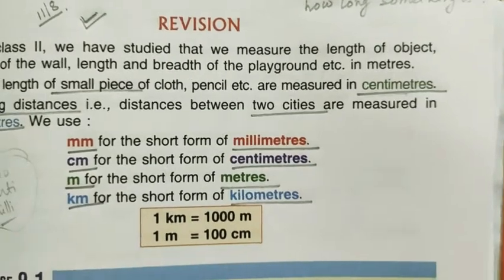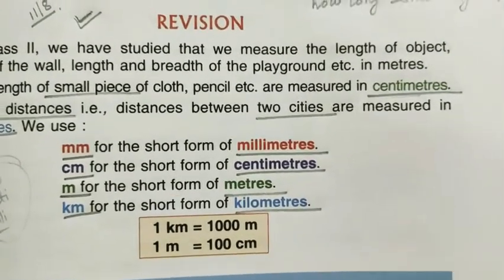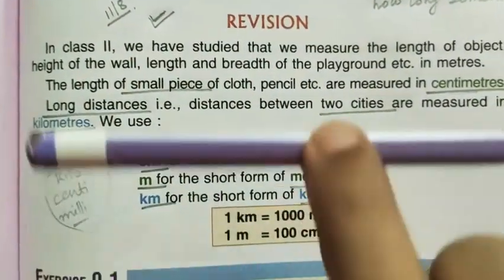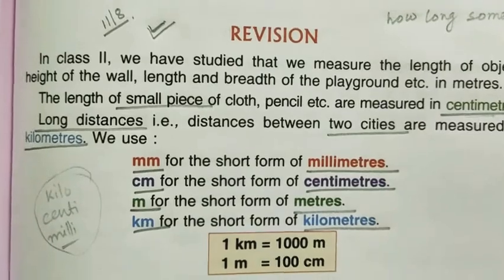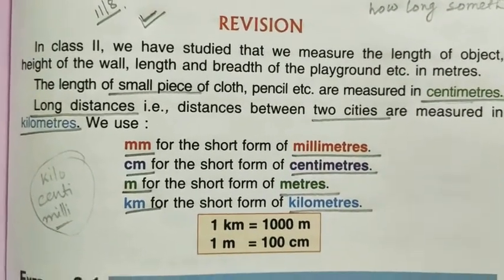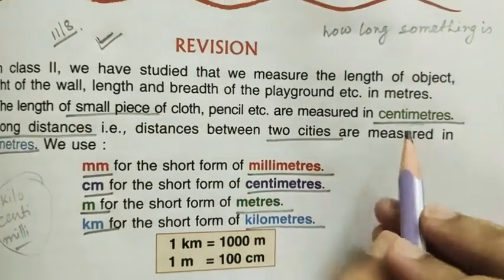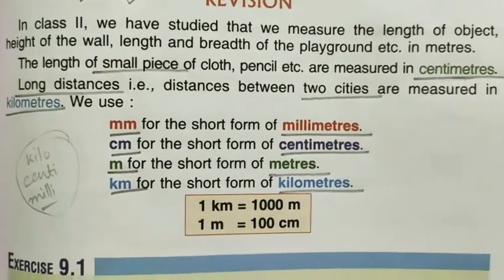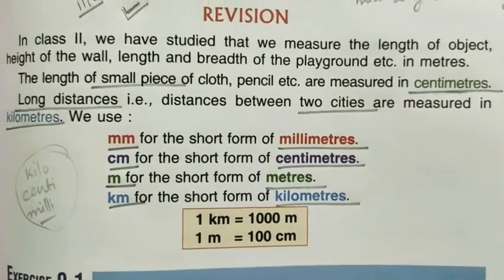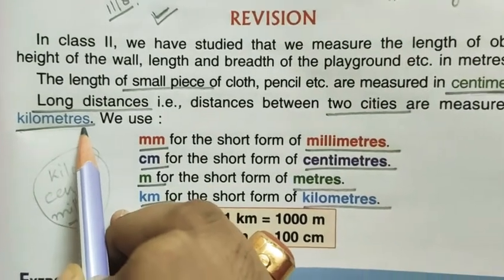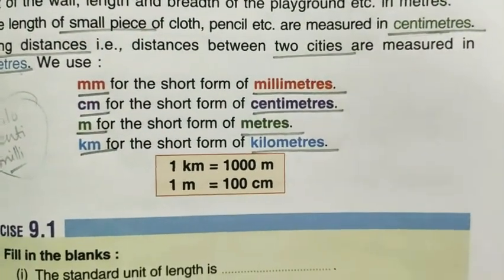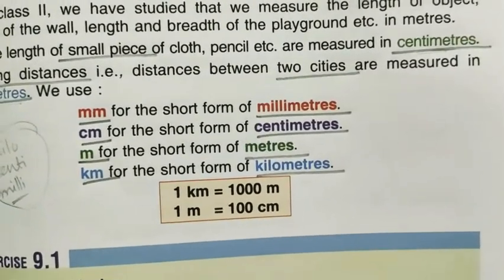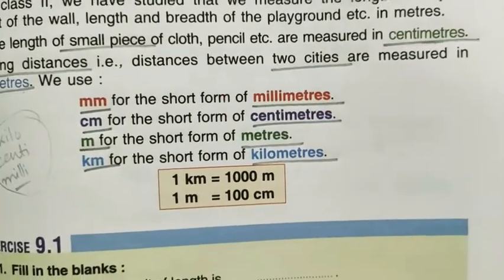Centi means smaller than meter, and kilo means bigger than meter. For different objects we use different units. For example, a pencil, a small piece of cloth, a small eraser — for these we normally use centimeter, which is a smaller unit. But for long distances, like a big road or the distance between two cities, we use a larger unit, that is kilometer. So the normal standard unit is meter, kilometer is bigger than meter, and centimeter is smaller. For small things we use centimeter, for big things we use meter.